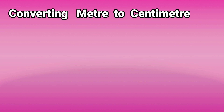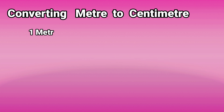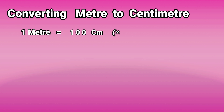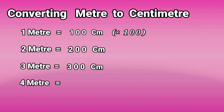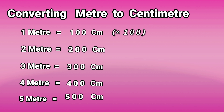Converting meter to centimeter table. One meter is equal to one hundred centimeters. Two meters is equal to two hundred centimeters. Three meters is equal to three hundred centimeters. Four meters is equal to four hundred centimeters. Five meters is equal to five hundred centimeters.